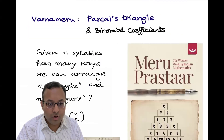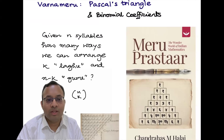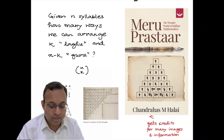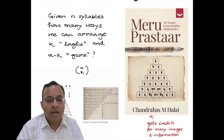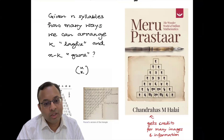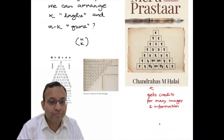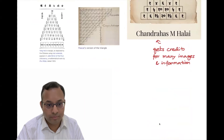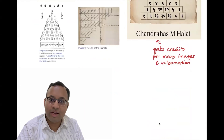In Varna Vrtta Chanda, where the number of syllables is the same in each line, one can also ask: given N syllables, how many ways can we arrange K Laghu and N minus K Guru? This is N choose K — the binomial coefficient — leading to Pascal's triangle. This is also found in China as Yang Hui's triangle from 1303. These are very fundamental mathematical topics discovered in multiple cultures.